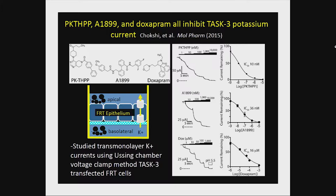We transfected an FRT monolayer cell line with TASK3 and studied potassium channel flux through the monolayer using an Ussing chamber system. This is the zero current level; this is the TASK current flowing through the monolayer. With application of the drug, there's a stepwise decrease in channel current. From concentration-response analysis, we calculated an IC50 of 10 nanomolar for the Merck compound, 36 nanomolar for A1899, and doxapram was three orders of magnitude less potent at 16 micromolar.